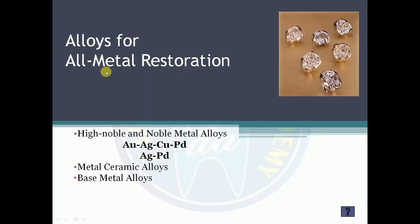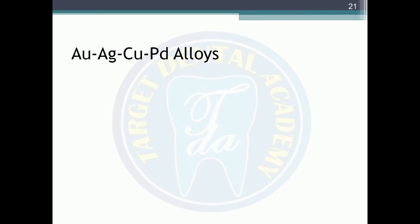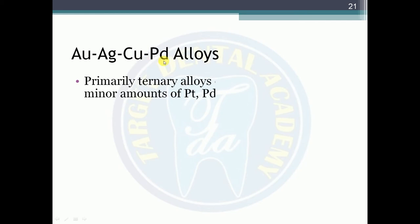Alloys for all-metal restoration include high noble and noble metal alloys: gold-silver-copper-palladium alloys, silver-palladium, and base metal alloys. Gold-silver-copper-palladium alloys are primarily ternary alloys of gold, silver, and copper with minor amounts of platinum, palladium, zirconium, and zinc. Approximately more than 90% of the total alloy content is gold, silver, and palladium.